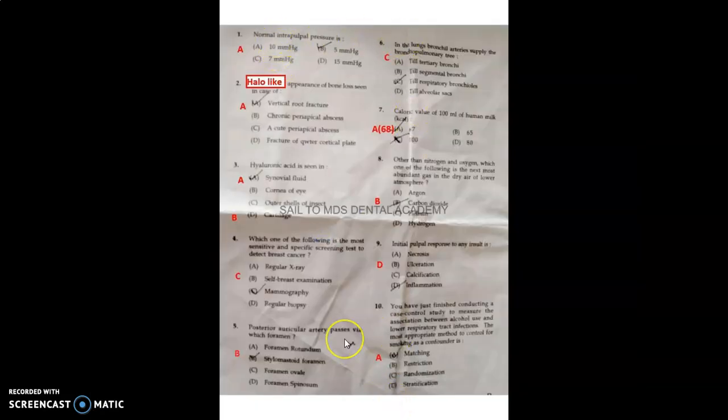You can see 10 answers. Normal intrapulpal pressure is around 10 mmHg. Halo-like appearance of bone loss is seen in the case of vertical root fracture. Hyaluronic acid is seen in synovial fluid. The most sensitive and specific skin test to detect breast cancer is mammography. Posterior auricular artery passes by stylomastoid foramen. In the lungs, bronchial arteries supply the bronchopulmonary till respiratory bronchioles. Caloric value of 100 ml of human milk is around 67 kcal, the correct value is 68. Other than nitrogen and oxygen, the next most abundant gas in the dryer of lower atmosphere is carbon dioxide. Initial pulper response to any insult is inflammation.